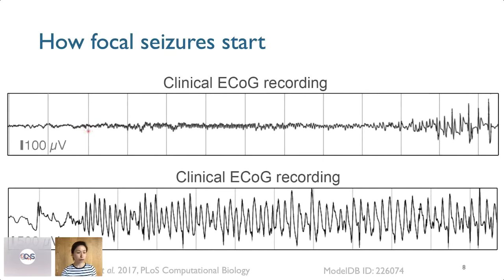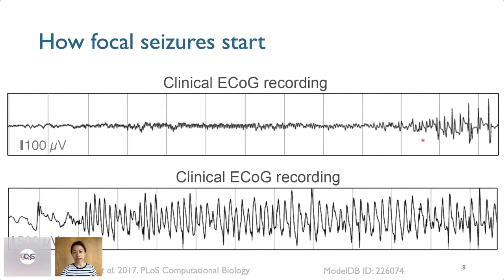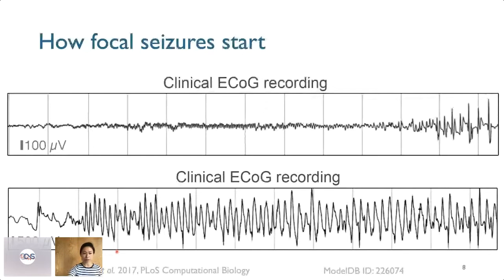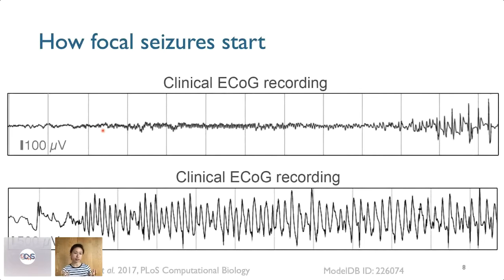One very typical way seizures can start is with a slow buildup in amplitude with very fast activity — this is usually termed the low voltage fast onset pattern. The second type shows high amplitude oscillations that immediately start at a fairly high amplitude but at a slower frequency. Out of all the possibilities in which a seizure can start, they tend to fall into one of these two categories, indicating there is some underlying mechanism we can try to understand.